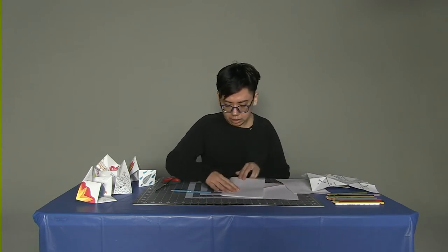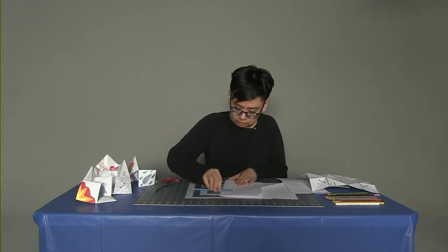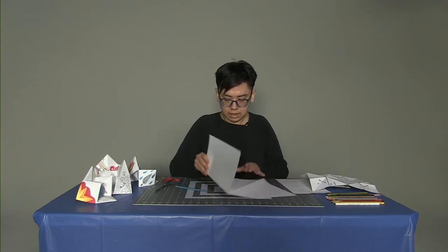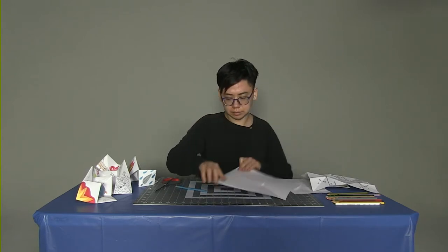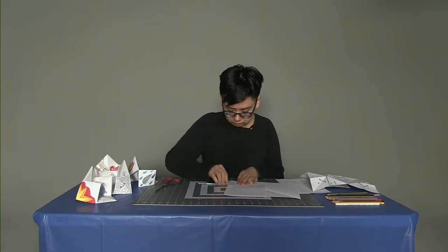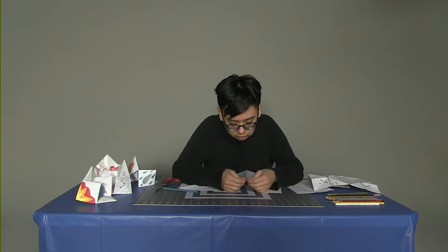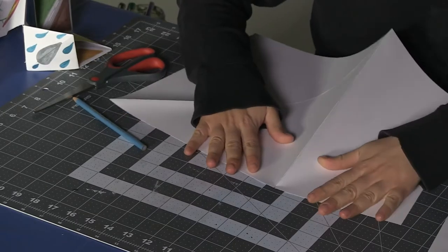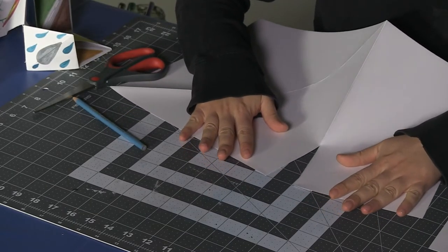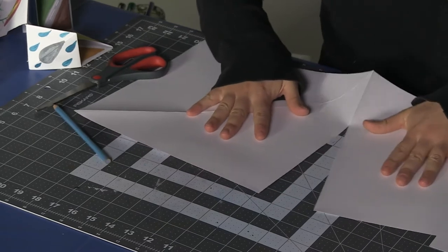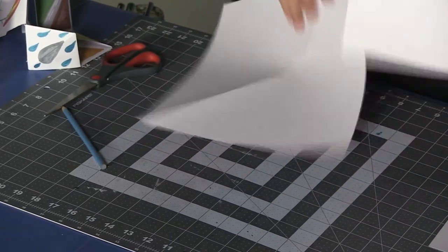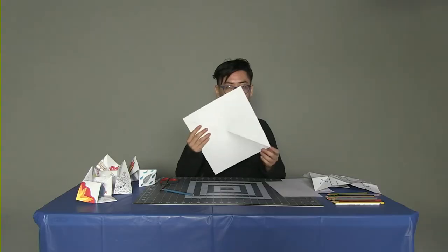So I'm going to fold it again the other way. And back once more. And then you can carefully start right here and tear right along the crease that you made. And now I have two pieces of paper and one of them is a square.